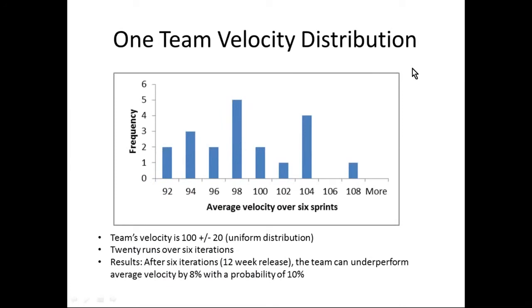Here's a very simple example. We're going to model a team that has a velocity of 100 plus or minus 20 points, so they range in velocity between 80 and 120. We want to know their average velocity over six sprints with two-week sprints — six iterations means a 12-week release, a pretty standard quarterly release. The average case approach says we'll complete 600 points after those six sprints, but since velocity is varying between 80 and 120, approximately 50% of the time we're going to finish fewer than 600 points.